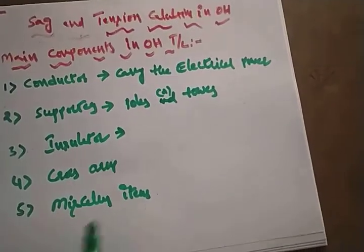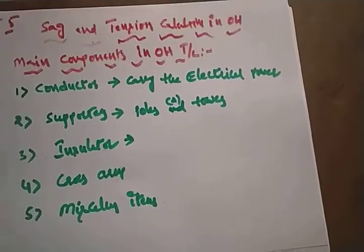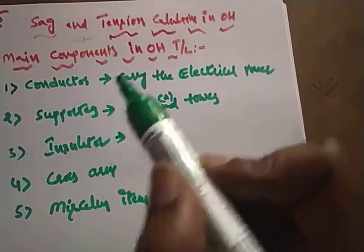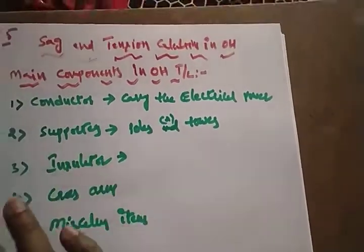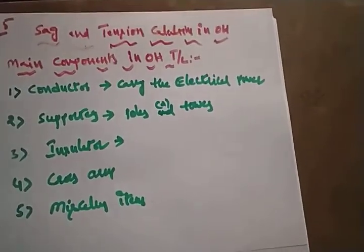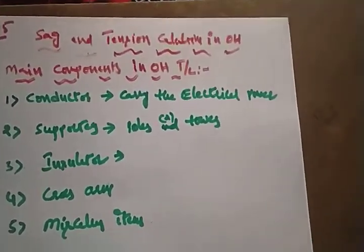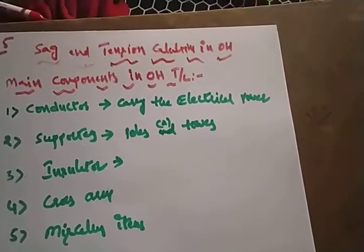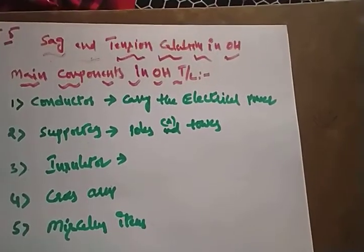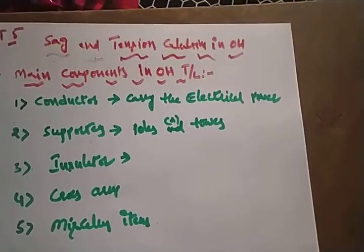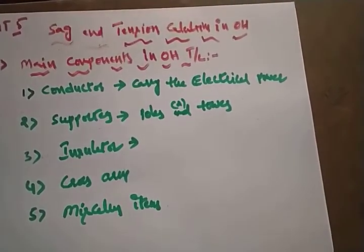Insulators are attached to the supporters to provide insulation between the conductor and the ground. We will discuss the insulator concept in detail in a following session. There are different types — pin type insulator, shackle insulator, suspension insulator — and they provide proper insulation between the conductor and the earth.